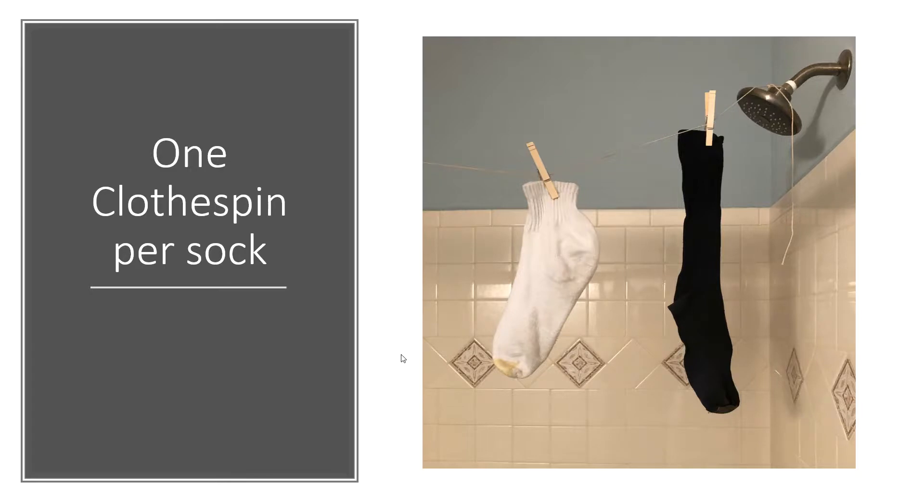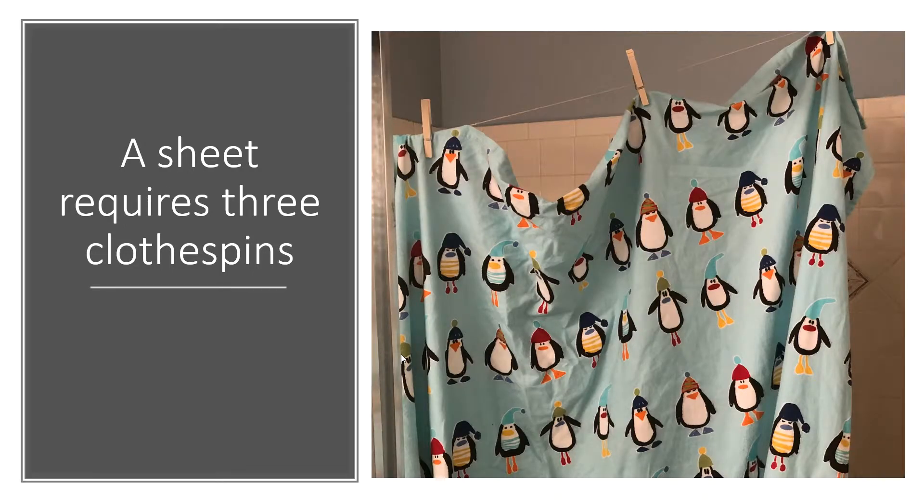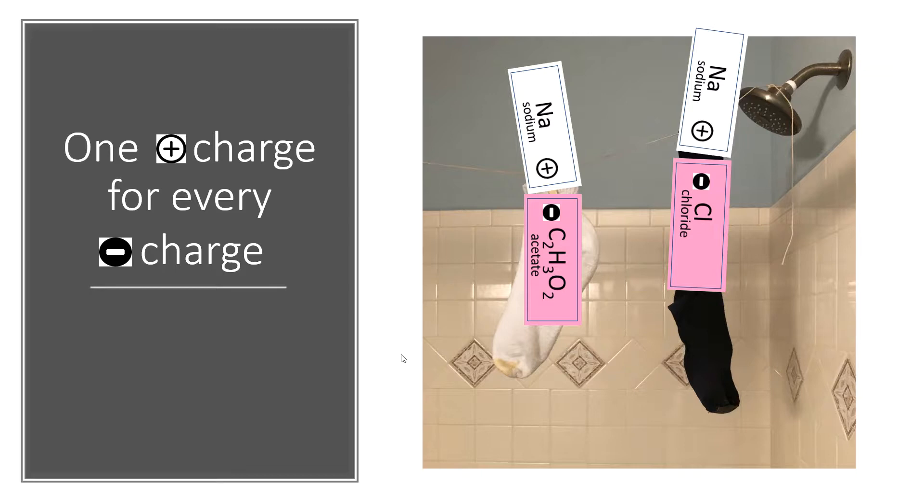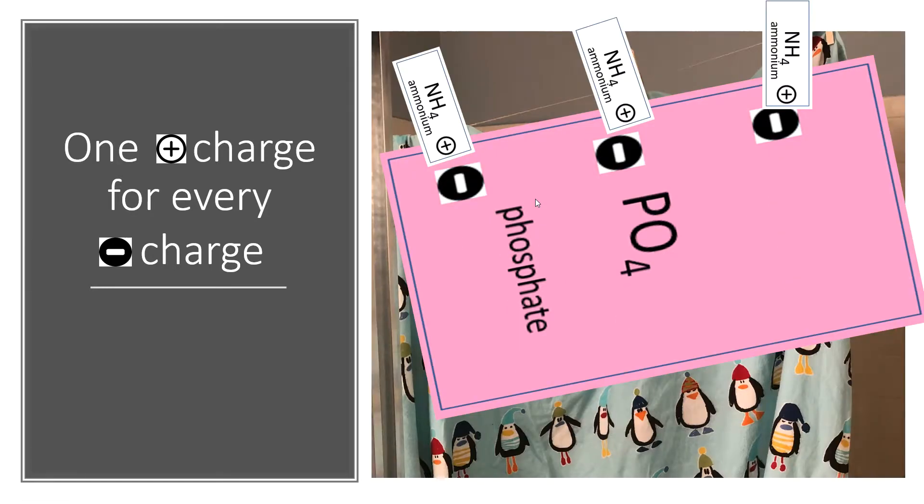Okay, we talked about how one clothespin will hang up one sock, right? One sock needs just one clothespin. Or if you have something bigger like a shirt, then you need two clothespins. If you have something even bigger like a sheet, then you may need three. The same is true with ionic compounds - if you have one positive charge, you just need one negative charge. If you have two negative charges, then it requires two positive charges to keep it up. If you have three negative charges, you need three positive to hold it up. And vice versa, if you had three positives, then you would have three negatives.